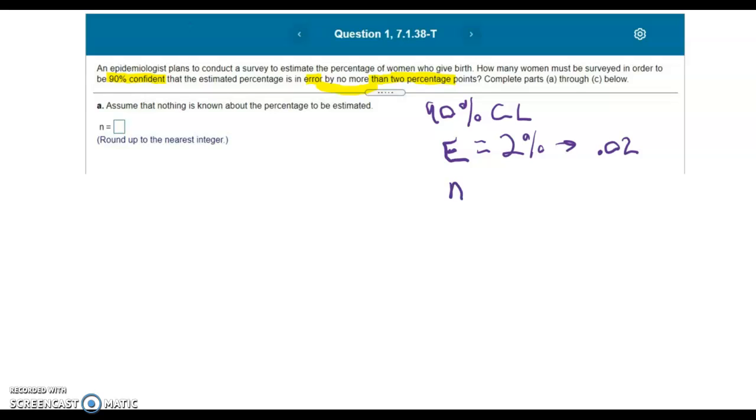We're looking for N. What is the sample size that we need in order to have no more than a 2% error for our 90% confidence level? For problems like this, there are two formulas that we use.